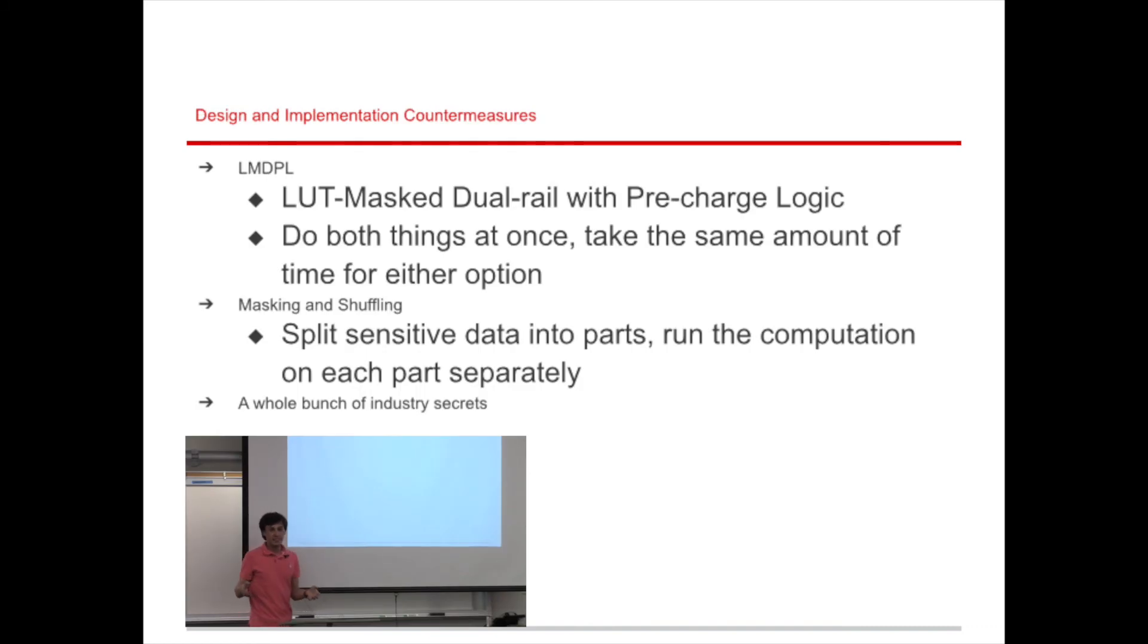So what exactly kind of countermeasures can we implement in our devices, both in hardware and software? Well, the first thing is a thing called LMDPL, which is lookup table masked dual rail with pre-charge logic, which is essentially just do both things at once. So if you have data that is processing something based on whether it's a 1 or a 0, then ask it to compute both at once and then just take the result of the one that you actually meant to.